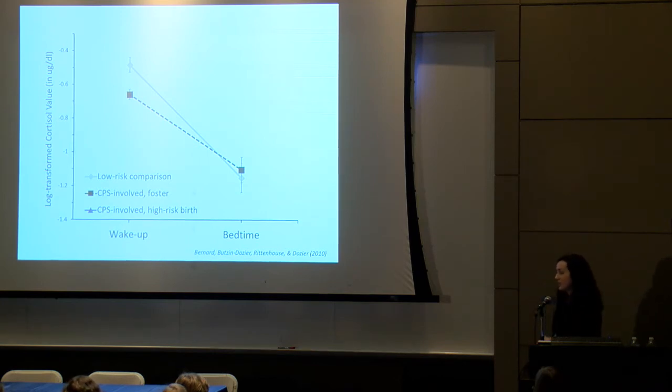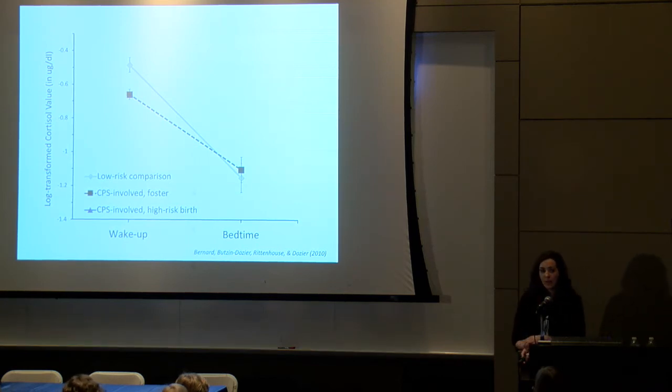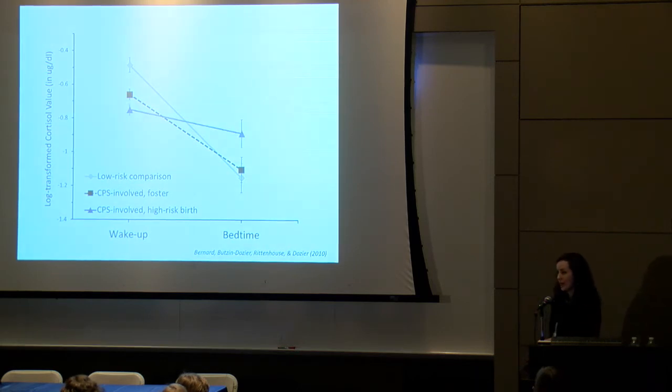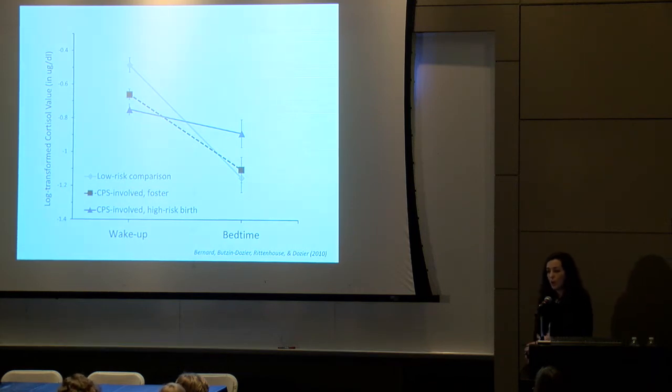When we turn to children who are also involved with child protective services but stayed in their own homes, we see the most atypical pattern which is characterized both by low cortisol when babies woke up in the morning as well as higher than typical cortisol at bedtime. What you see here is a low morning cortisol level as well as a blunted slope or decline across the day.